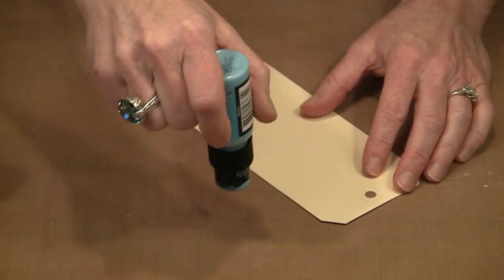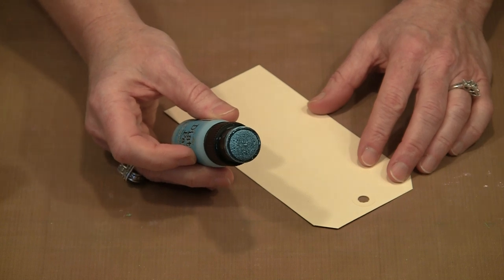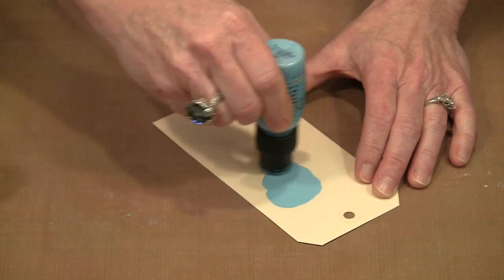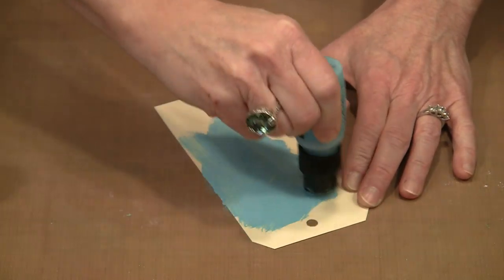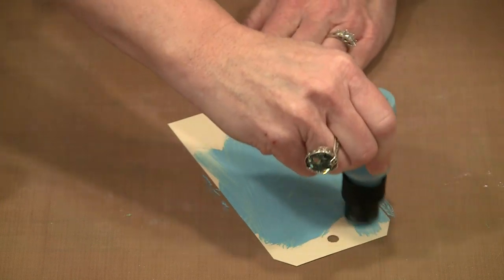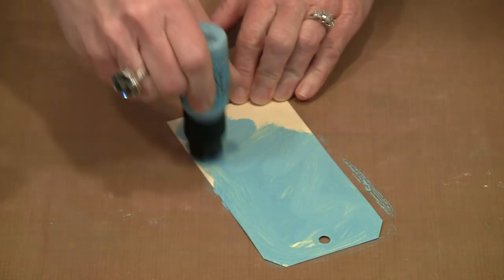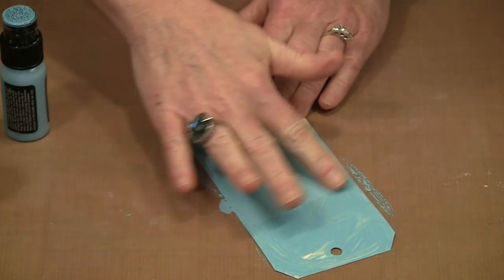They all have a dabber top, and to start them you press down, hear the little click as the valve opens, and then it's just a question of putting it down on the surface and squeezing. You can put it on with the dabber top, which will leave some streaks that lend interesting texture. You can brush it out, or even use your fingers. The paint is really easy to work with.